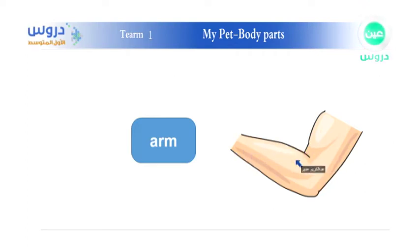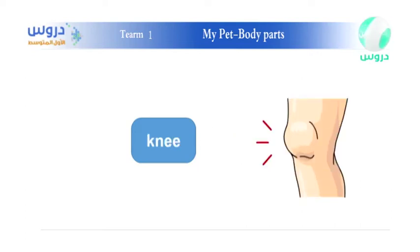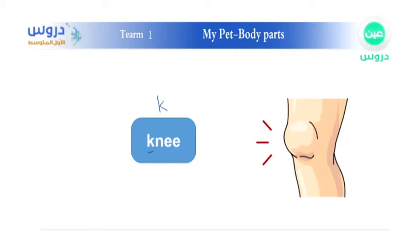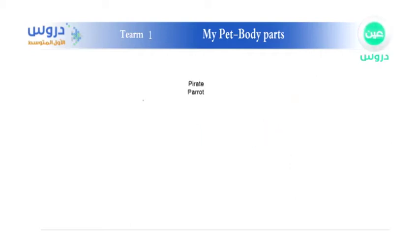This is a knee. Pay attention to the K, guys — it is silent. I need to tell you something very important: if you have a word that starts with K and N, the K is always silent. I'm going to give you some examples.